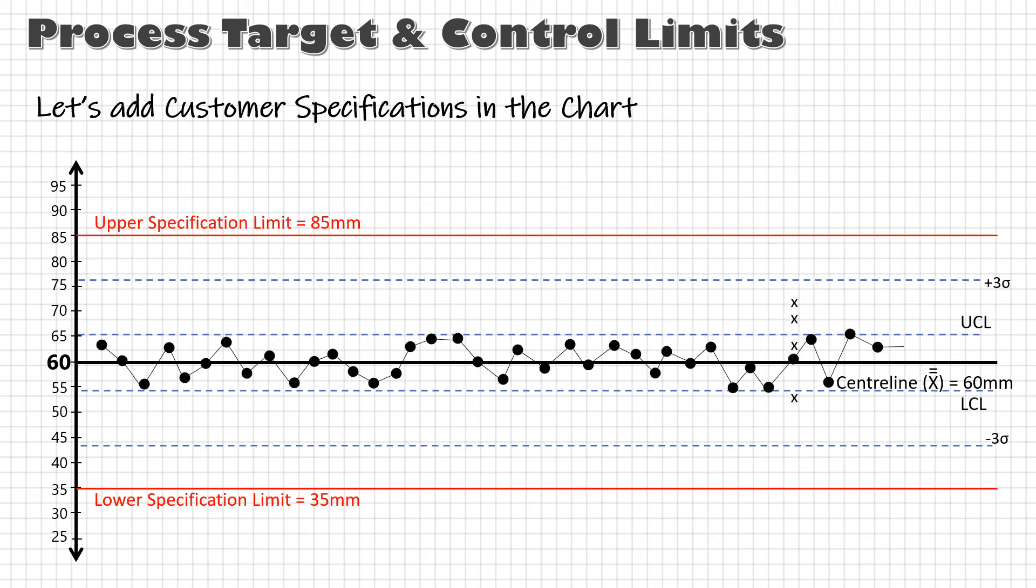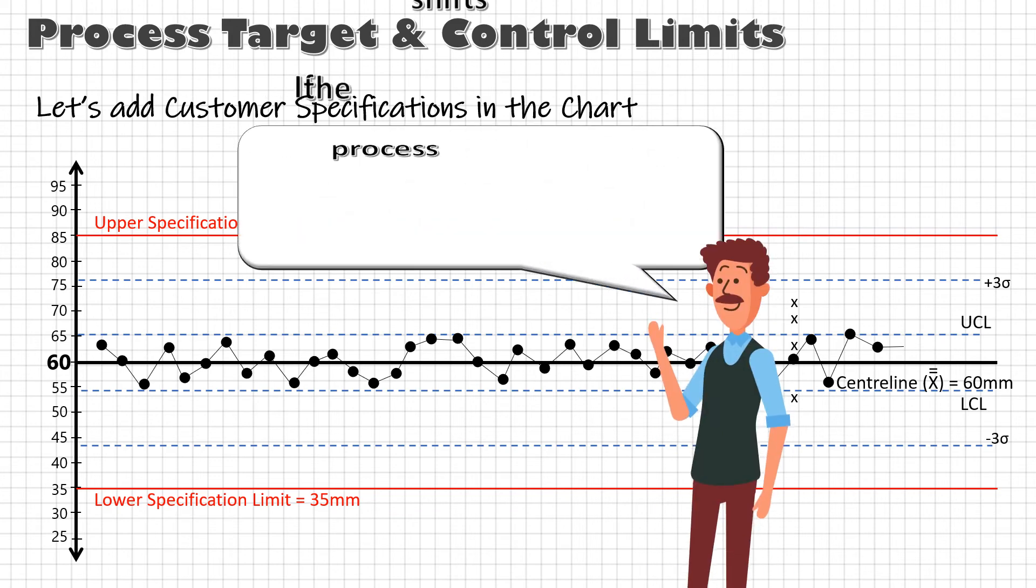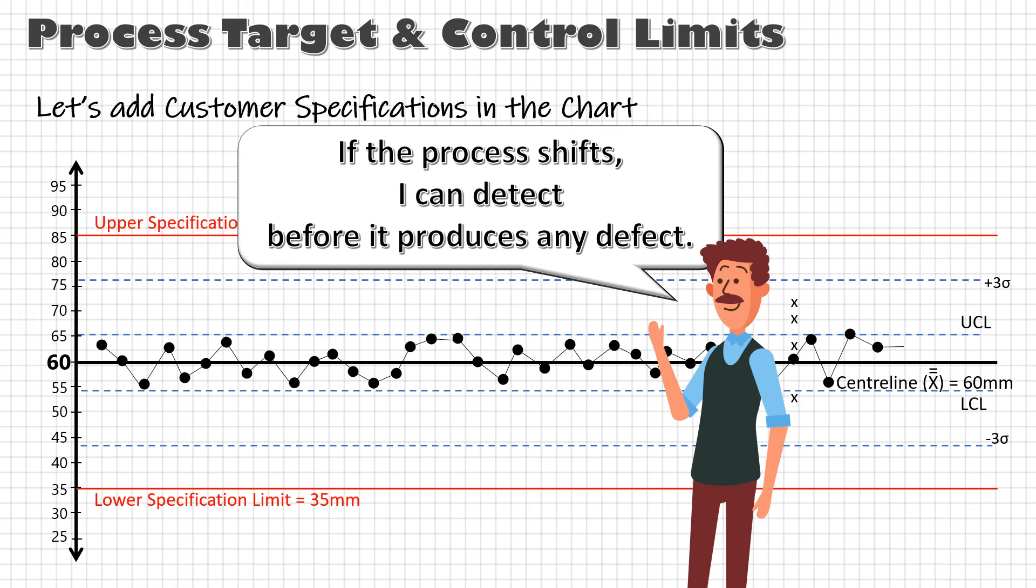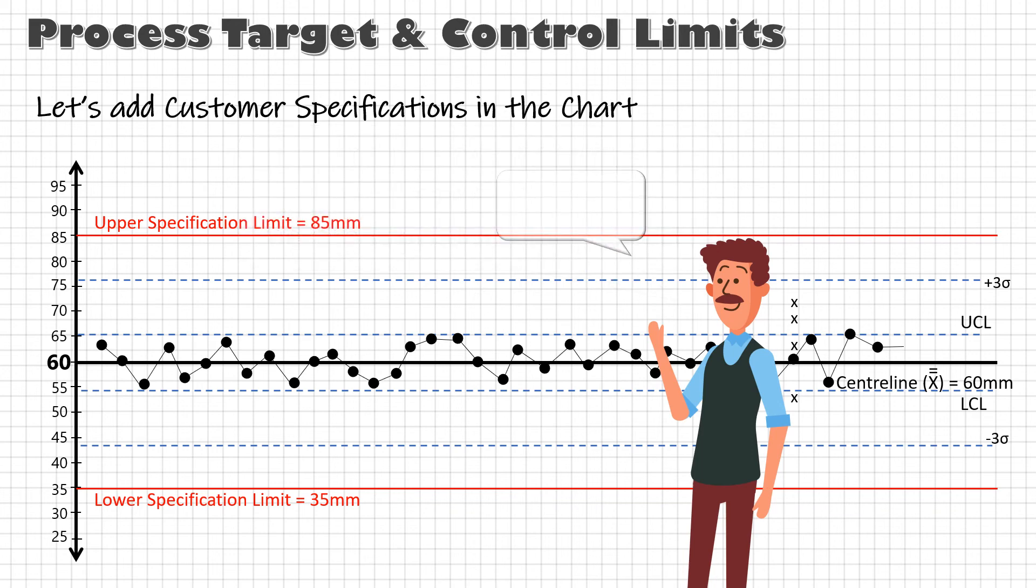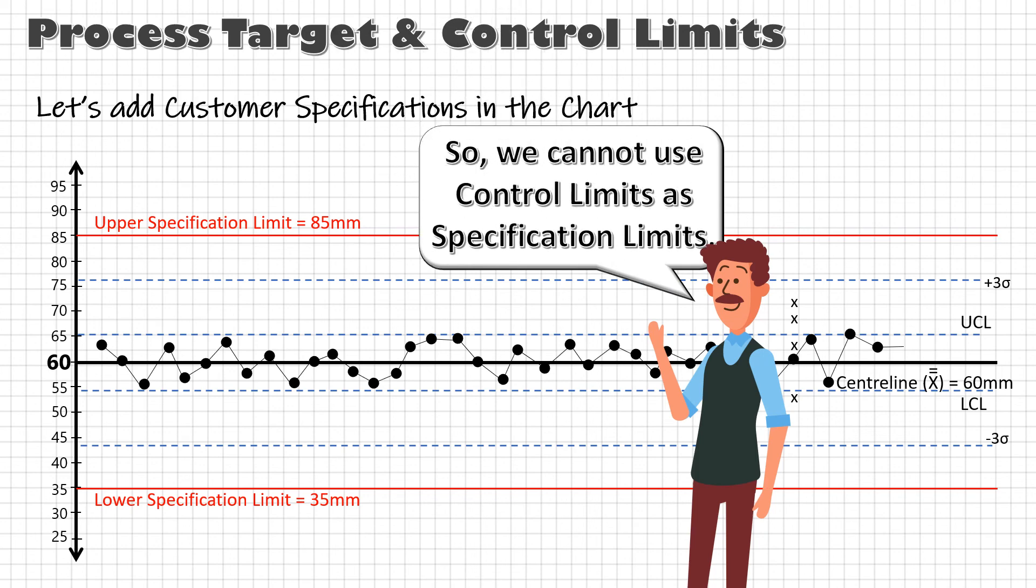The ideal situation will be to have the specification limits well outside of the plus minus three sigma of the process. Because in this case, even if the process gets a little shifted over time, it has the probability to keep on producing okay parts by the time we detect this shift using control charts. Can you see now why we can never use specification limits as the control limits?